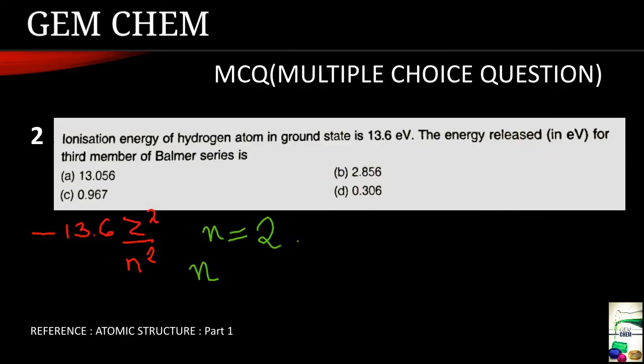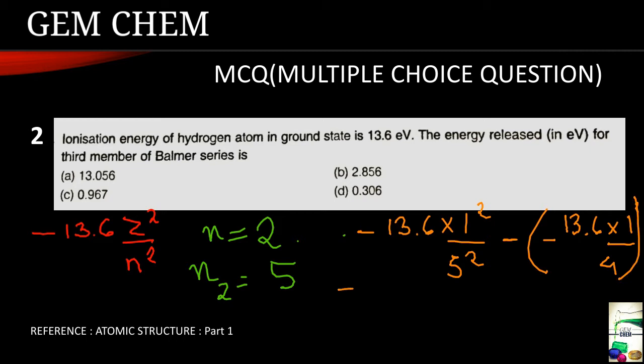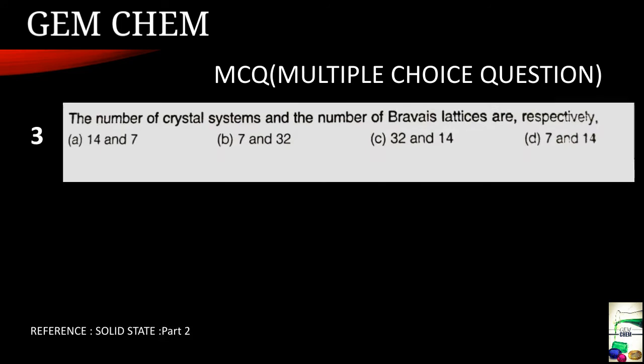So our required answer is minus 13.6 minus 13.6 into 1 square by 5 square minus of minus 13.6 into 1 square by 4 and the answer comes to be as 2.856. So this is the correct answer, so our answer is option B. Now we will go for the next question.